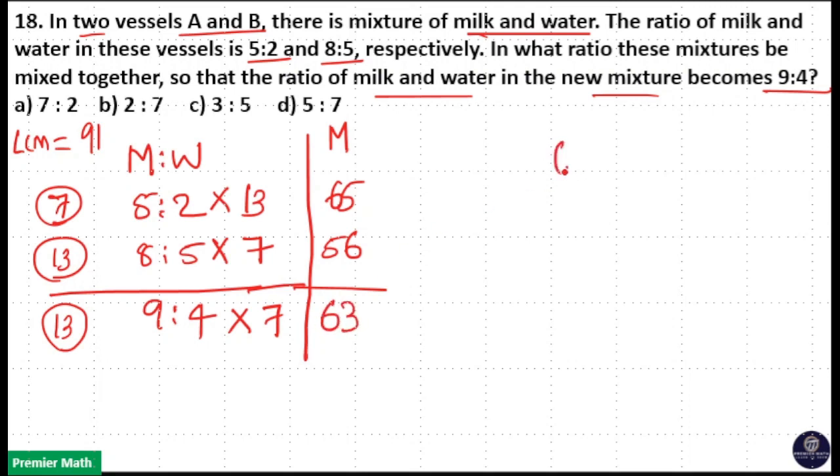Use the allegation method here. In the first vessel, milk part is 65. Second vessel, milk part is 56. And final mixture, milk part is 63. This is milk.